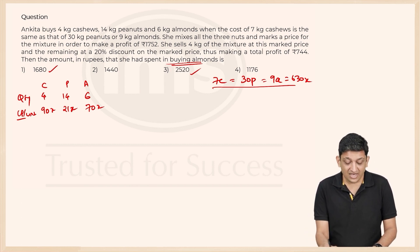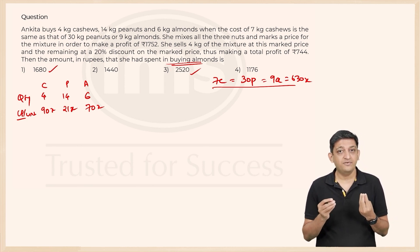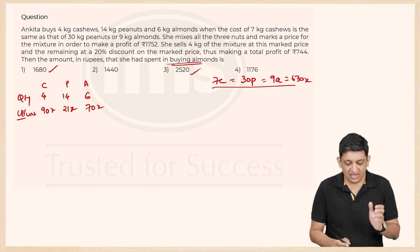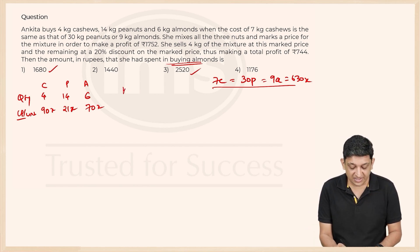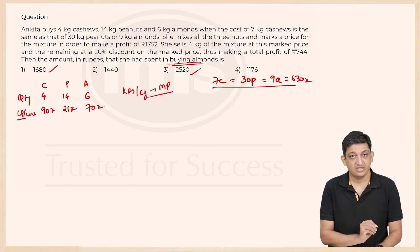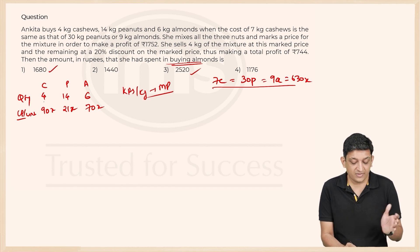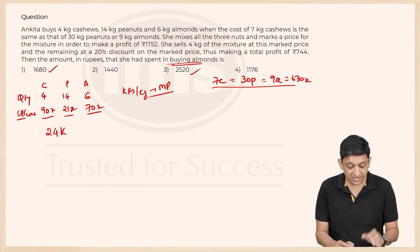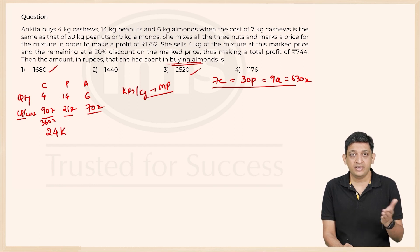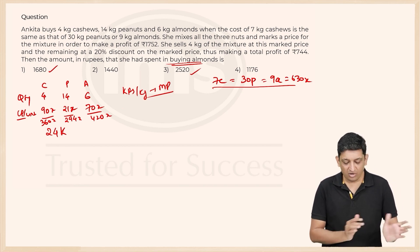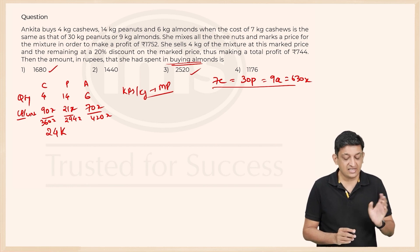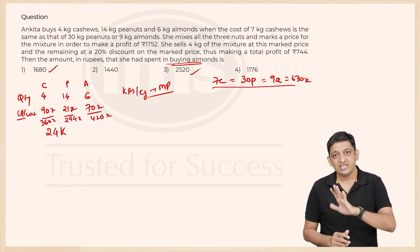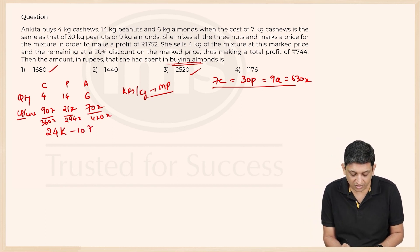So in this case, we have been told that she marks a price for the mixture to make a profit of 1752. Let us say I come up with a different variable, let us say she marks it at K rupees per kg. This is the marked price per unit. So what is the marked price for this entire quantity? 4 plus 14 plus 6 that is 24 kg, so 24K is basically the marked price. What was the cost price? 90X, 21X, 70X per unit. So the total cost price would be 360X, 21 into 14 will be 280 plus 14 that is 294X and 70 into 6 will be 420X. Adding all 3 of them, so 360 plus 300, let us say 660 plus 420, 1080 minus 6 is 1074.